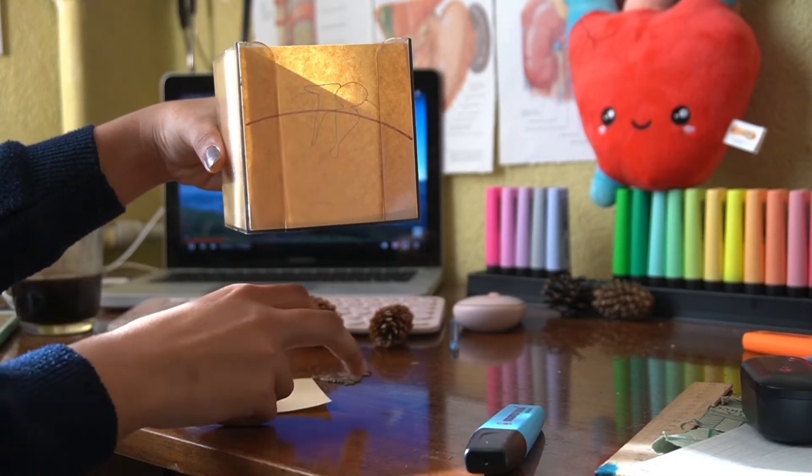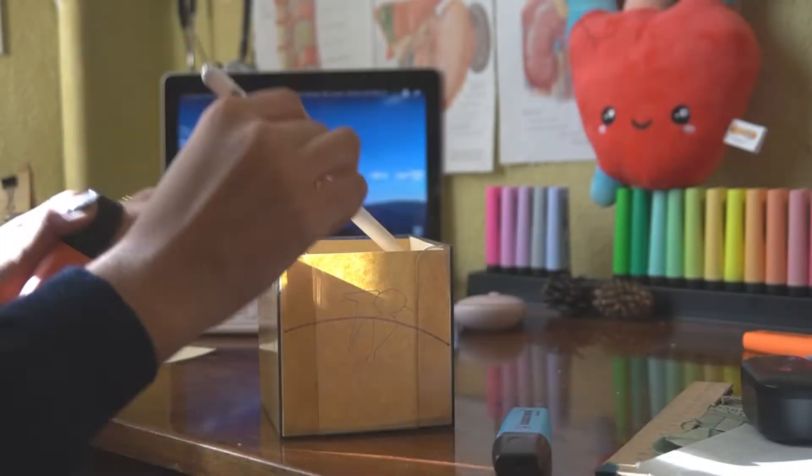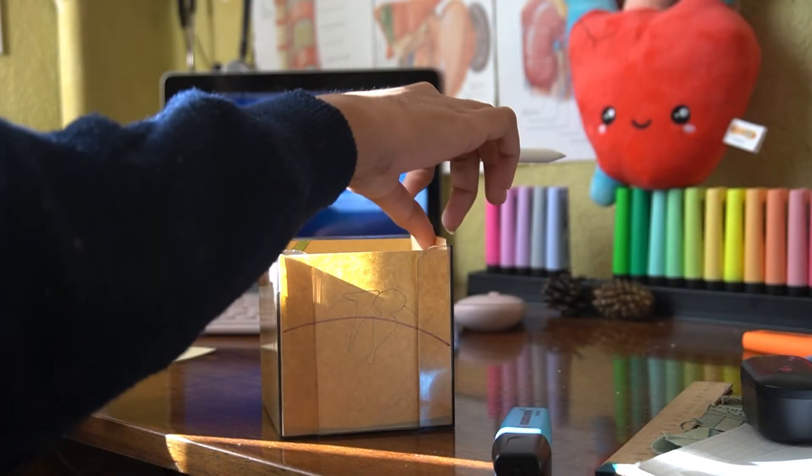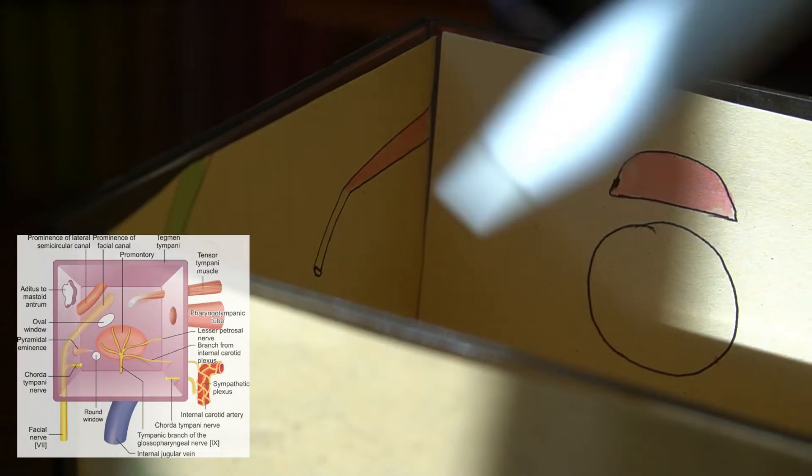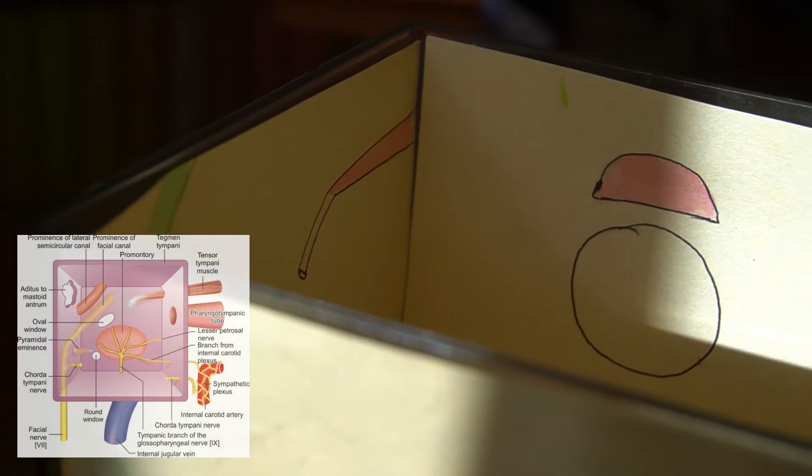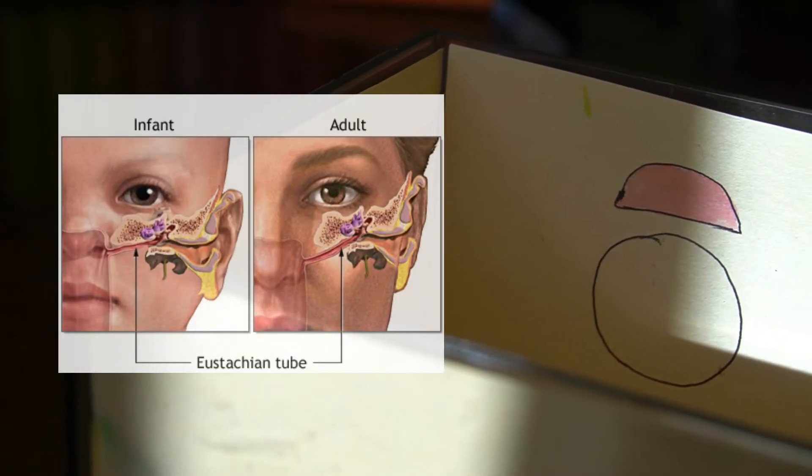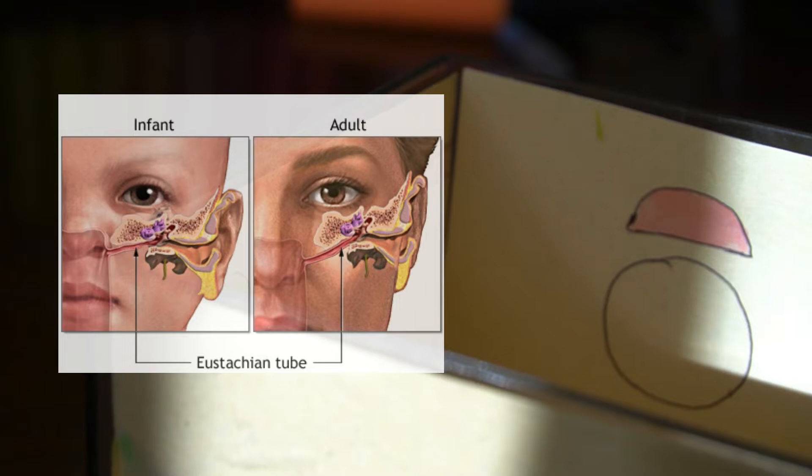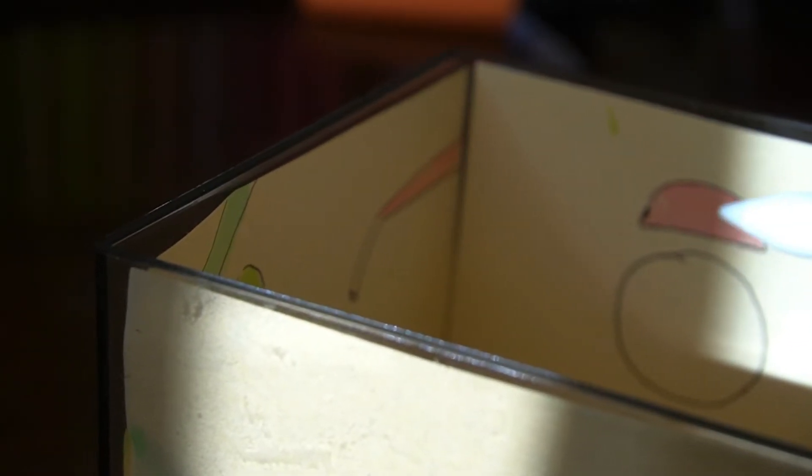The anterior wall also has two openings. The lower one is for the eustachian tube, which connects the middle ear cavity with the nasopharynx. Therefore, infections from the nasopharynx can easily travel retrograde up to the tympanic cavity and cause otitis media. The superior one is for the tensor tympani muscle.